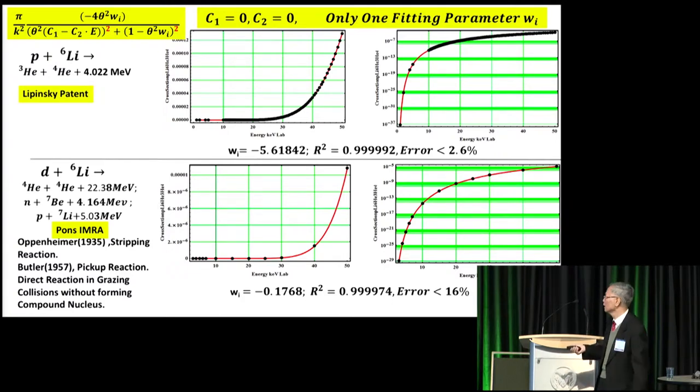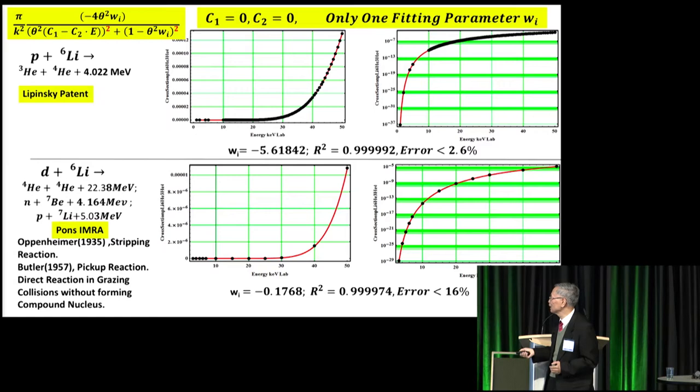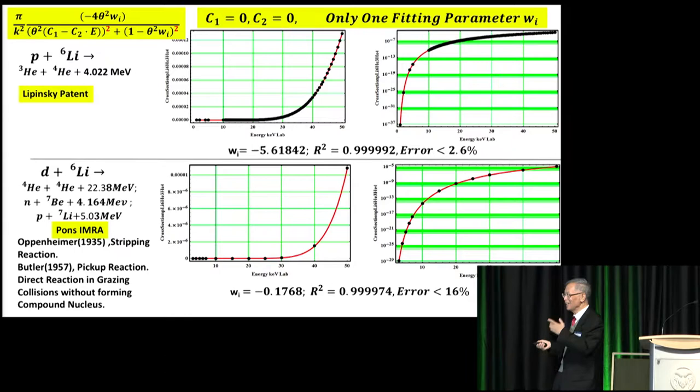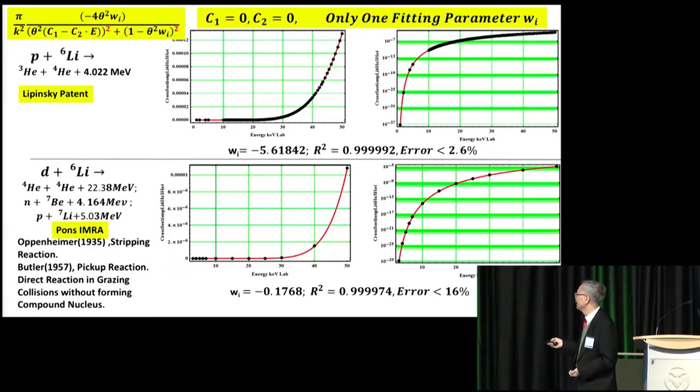How about deuteron plus lithium six? We have a similar picture. And lithium six plus deuteron will produce two alpha. By fortune, my French friend, Biberian, told me that early, the last period of IMRA, Pons did the enriched lithium six electrolysis experiment in the deuteron. And after several months electrolysis, suddenly a big amount of helium emerges. And for this P plus lithium six, there is a support from Lipinski patent. By fortune, my friend Peter Hagelstein just told me he will do this experiment for replication. So the experiment shows a good sign for us.